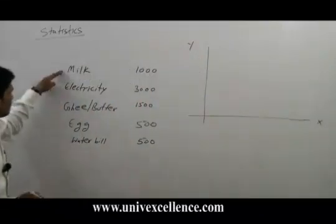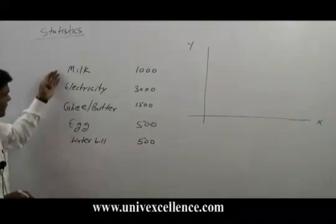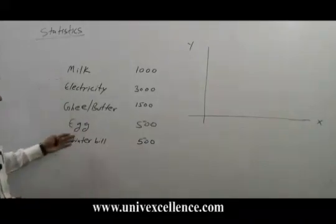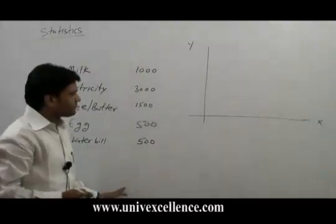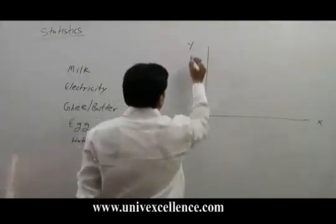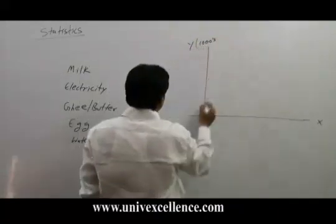X-axis and y-axis. On x-axis, we take the different commodity or the different expenditure. And on the y-axis, we represent the rupees in thousand.